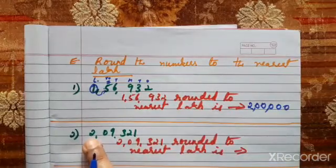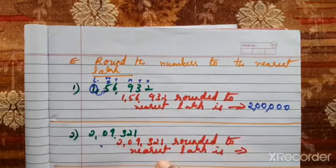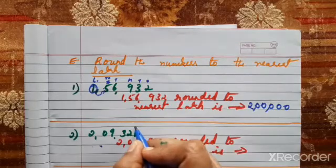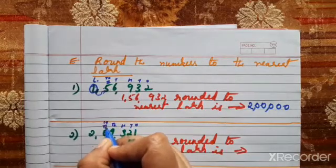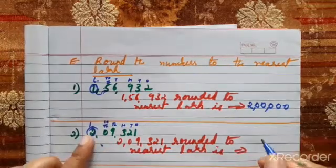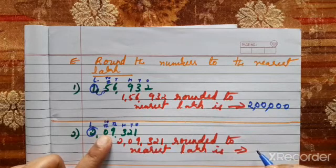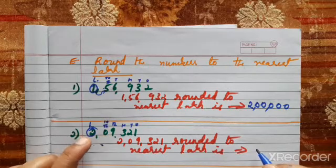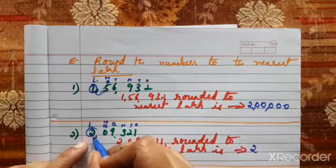Second question: 29,321 we have to round off. 29,321 rounded to nearest lakhs. First step, check the place value: ones, tens, hundreds, thousands, ten-thousands, and lakhs. 2 is in the lakhs place — circle 2 in the lakhs. Knock the door; here the neighbor is 0, no money, so he can't help. No 1 is added; this number remains the same.